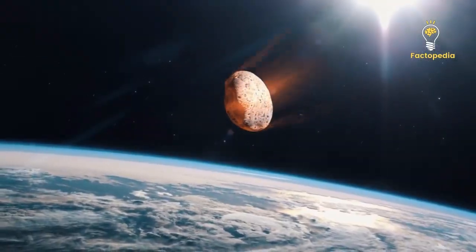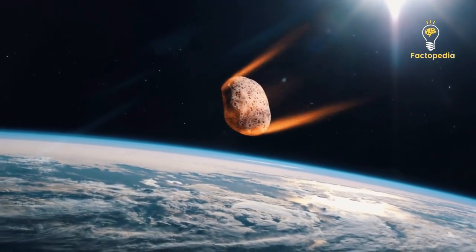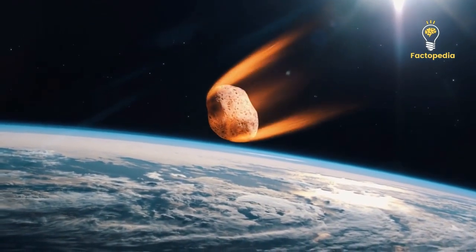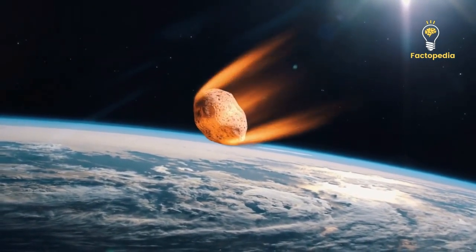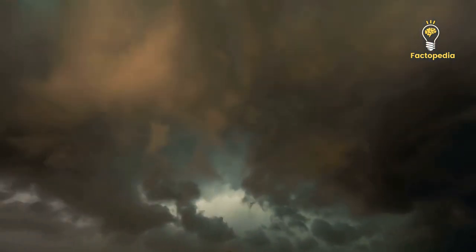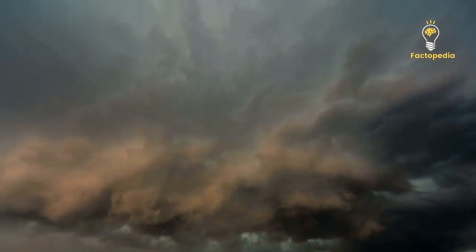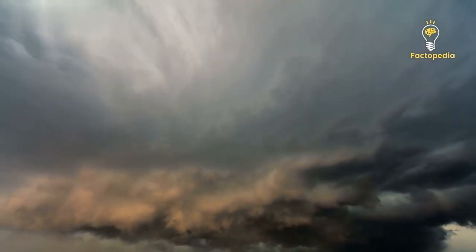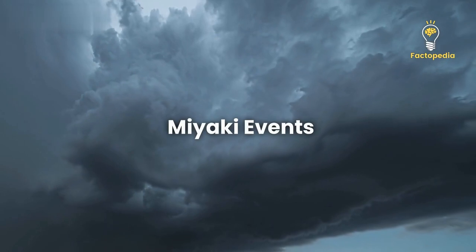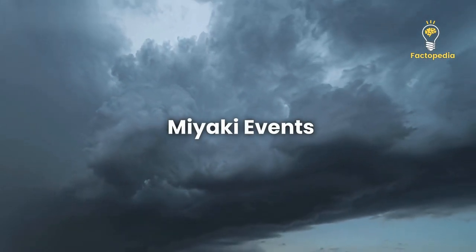After two centuries had passed, the same phenomenon occurred once more, albeit with a 60% decrease in intensity. Upon close examination, scientists identified a total of six such cosmic storms that have affected Earth over the course of several millennia. Today, these occurrences are referred to as the Miyake events.